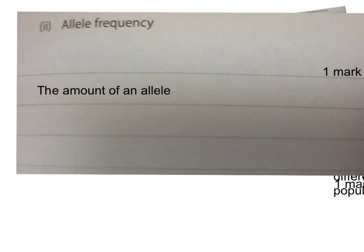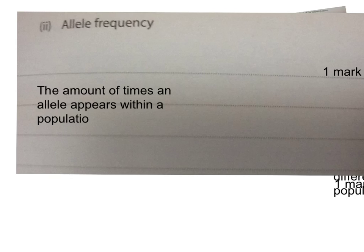We could adjust that — though we should never use the word 'amount' in biology. The number of times an allele appears within a species, or a population of a species. Population implies it's a species — population is the total number of a species. Lovely — full stop. That's our answer. We tick yes, and we are finished recording. Say goodbye, everyone. Bye!